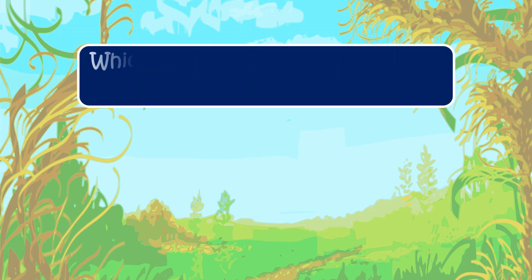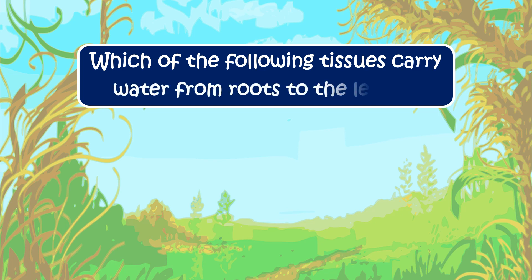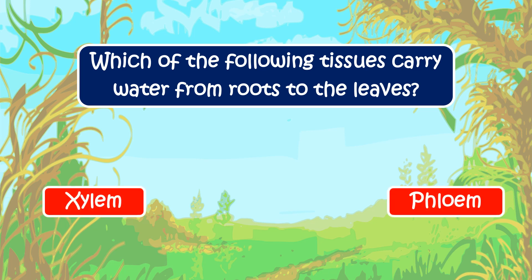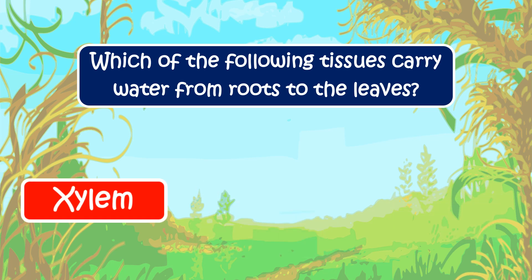The next question is: which of the following tissues carries water from the roots to the leaves? The options are xylem, phloem, or both xylem and phloem. The correct answer is xylem.